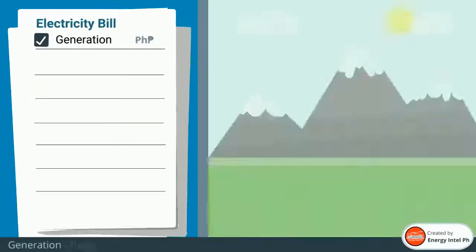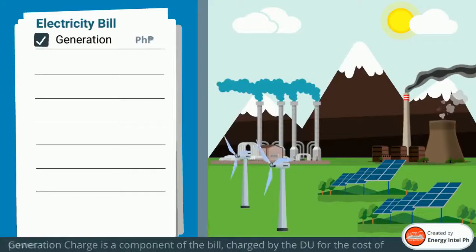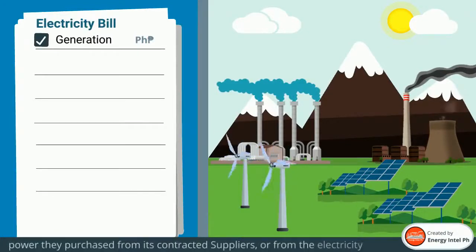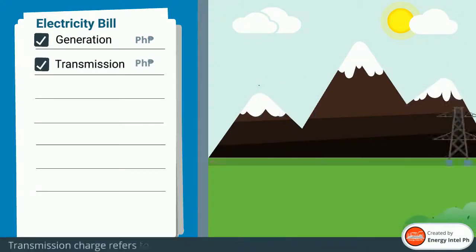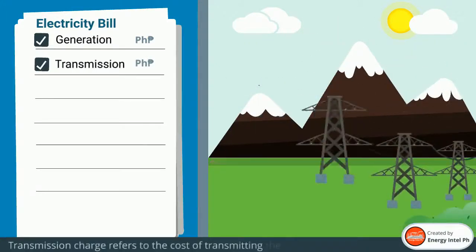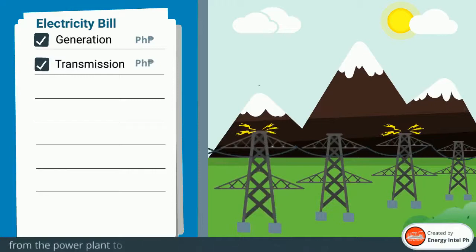Generation charge is a component of the bill charged by the DU for the cost of power they purchased from its contracted suppliers or from the electricity market. Transmission charge refers to the cost of transmitting electricity from the power plant to the distribution utility through the use of the high voltage backbone system.